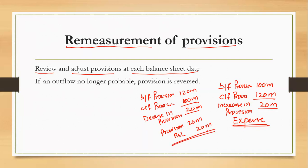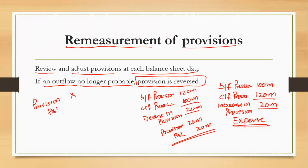At each reporting date, check whether the provision needs to increase — record as expense — or decrease — record as income. If an outflow is no longer probable, the provision must be reversed: debit provision, credit profit and loss account. If you have created a provision and need to settle it, the settlement entry is: debit provision, credit cash or whatever is being paid.